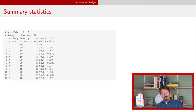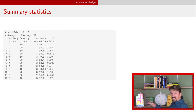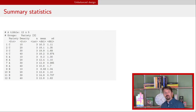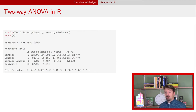You can still compute summary statistics. You'll notice that the line corresponding to variety B and density 30 — the second-to-last line — has only two observations instead of the usual three, demonstrating that the data are unbalanced. We can still conduct and interpret the two-way ANOVA table in the same way as before.